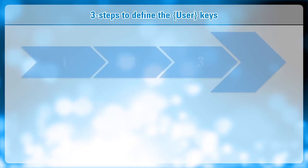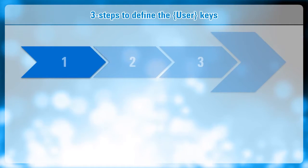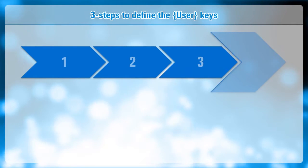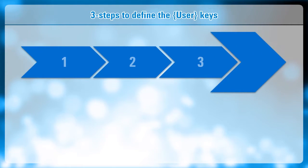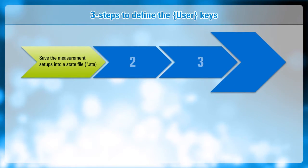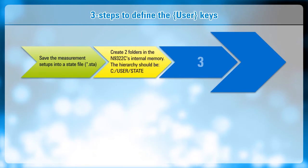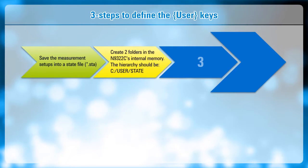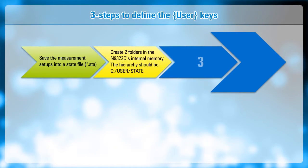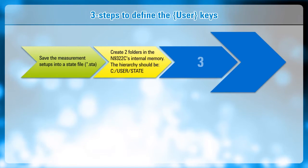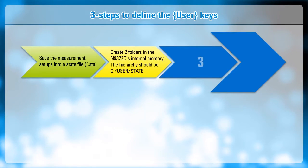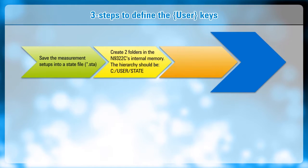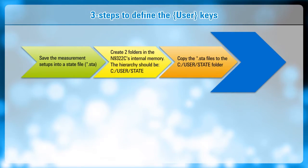It takes just three simple steps to establish the functionality of your user key. First, you need to save the measurement setups into a state file. Then, you need to create two folders in the N9322C's internal memory. The hierarchy should be C colon backslash user backslash state. For the final step, copy the state files to the state folder you just created.